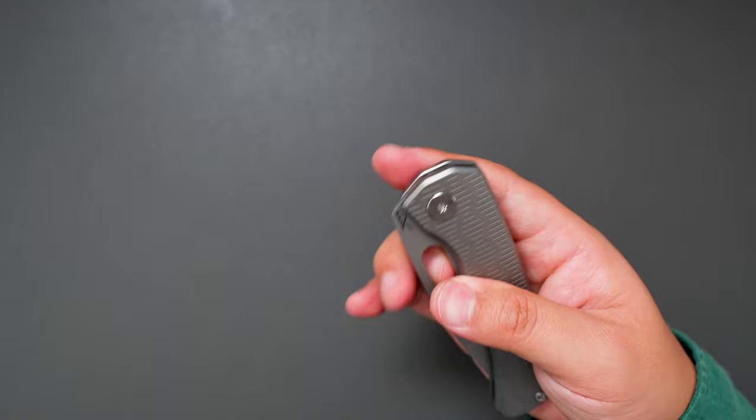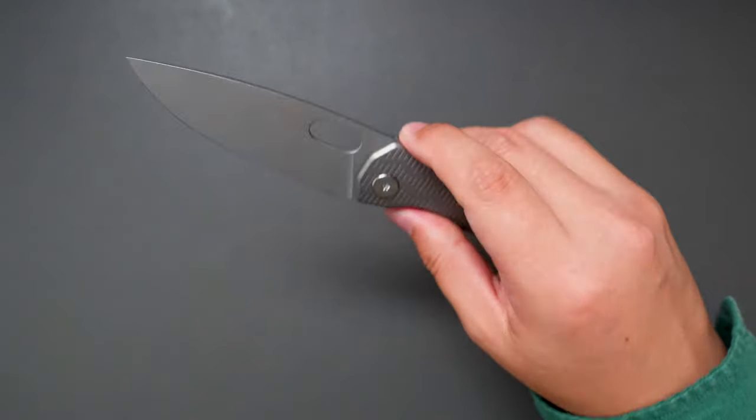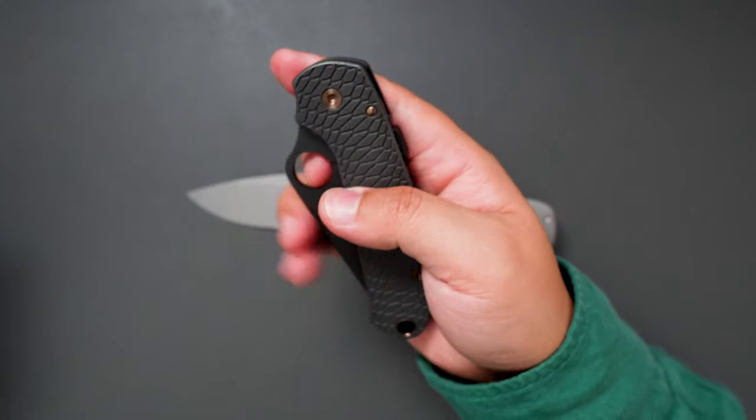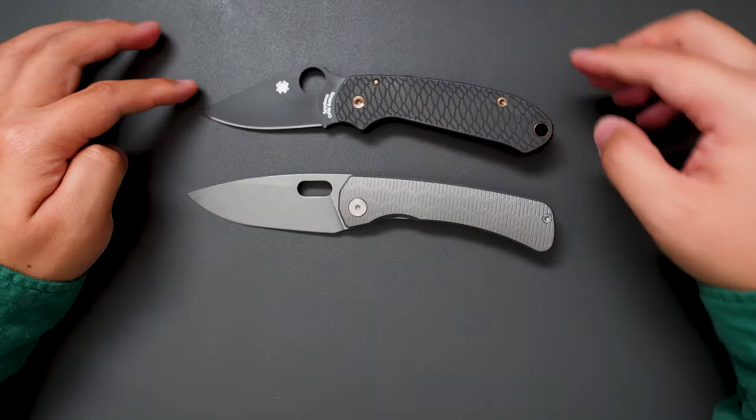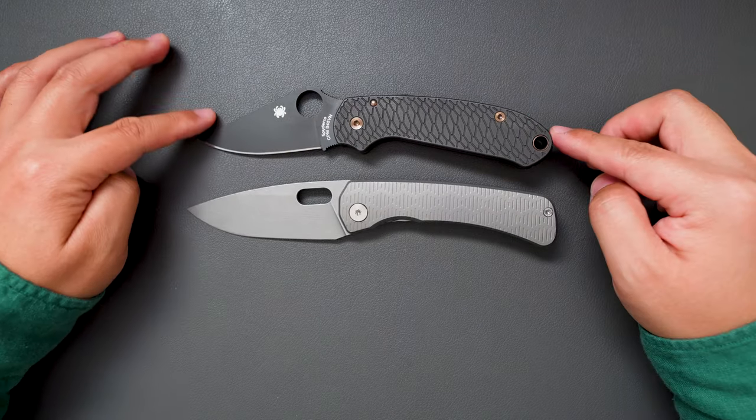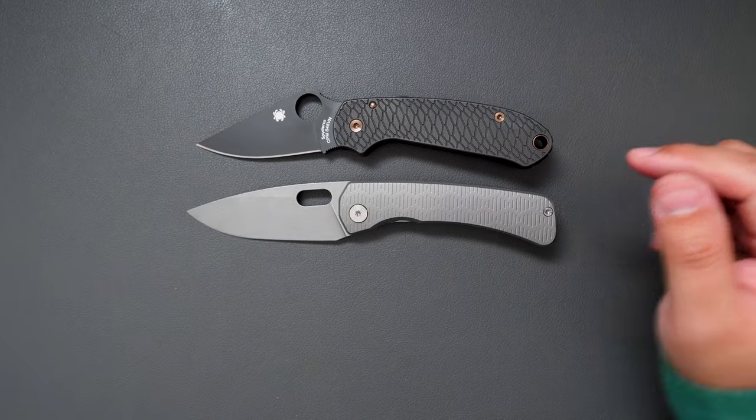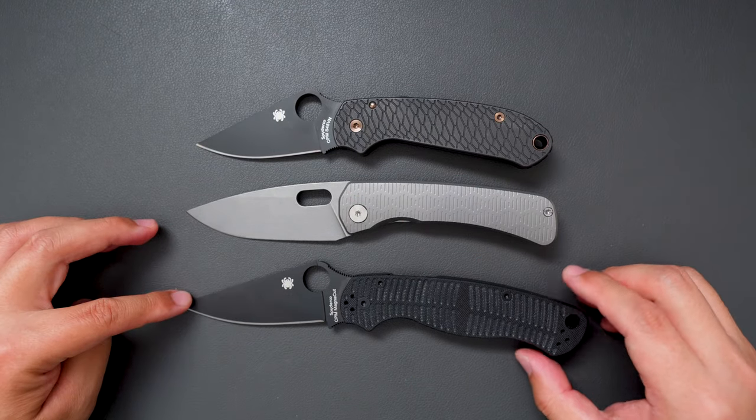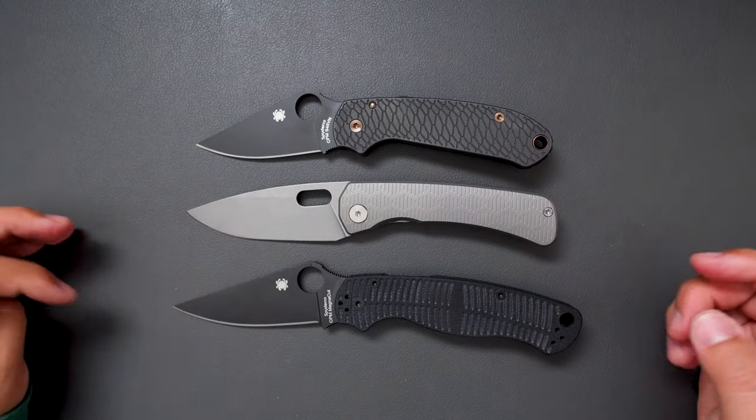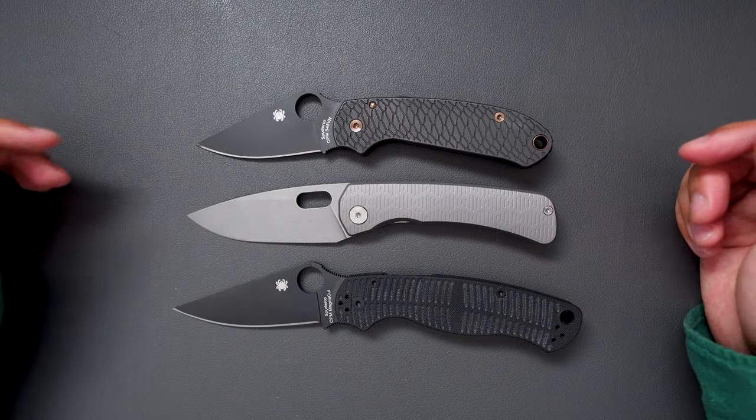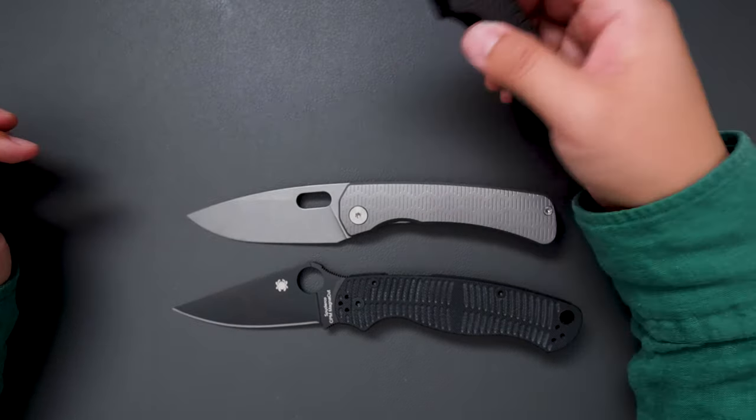Now let's do some size comparison. Bring out my Spyderco Para3. As you can see the Para3 is a little bit shorter than the Lamia. And how about the PM2. PM2 is a little bit longer. So right in between the PM2 and the Para3.